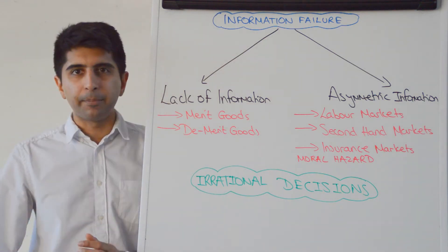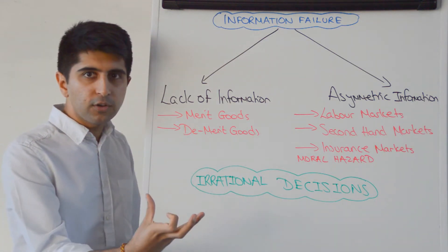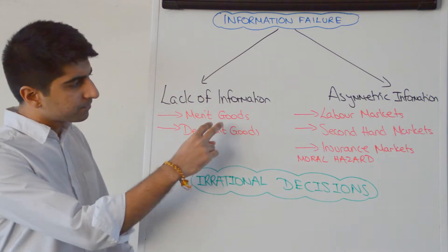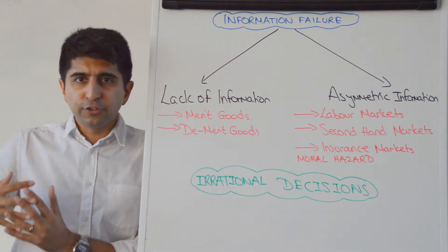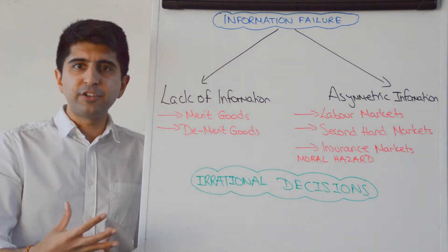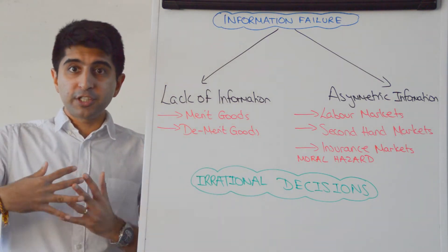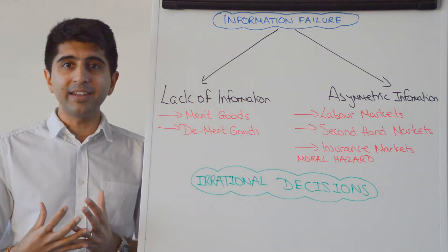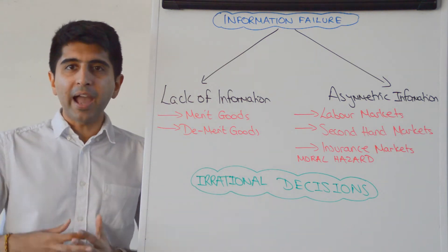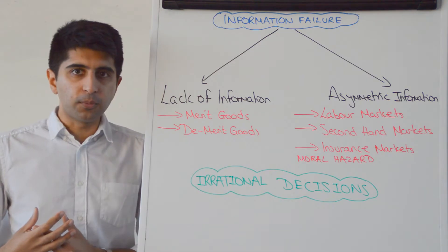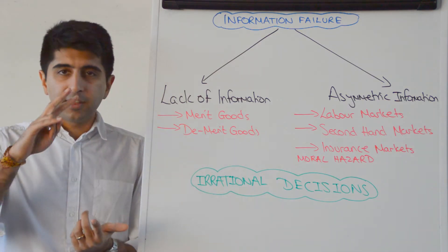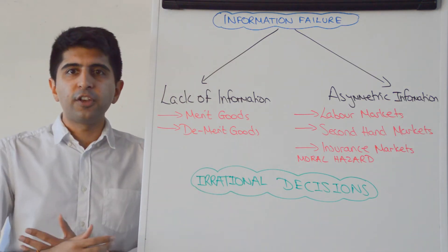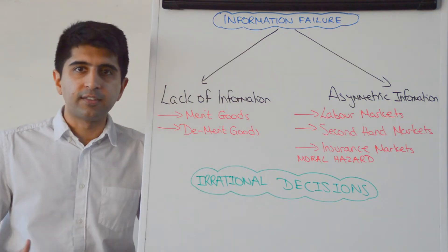Two great examples are with the consumption of merit goods and de-merit goods. With merit goods, there is not enough information out there which tells the consumer how good consuming that product is for them. As a result, merit goods are under consumed — things like healthcare, education, certain nuts for example.